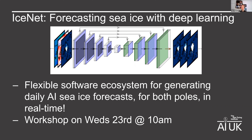Following our proof-of-concept study, which was published in Nature Communications last year, further funding from the Alan Turing Institute and a collaboration with the Research Engineering Group at the Turing has led to James Byrne and James Robinson developing a flexible software ecosystem for generating daily Arctic sea ice forecasts with IceNet for both poles, running in real time.